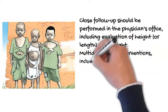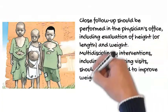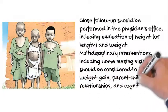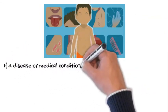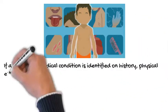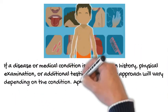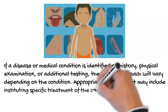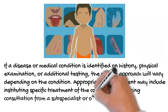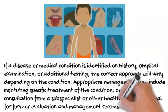Multidisciplinary interventions, including home nursing visits, should be considered to improve weight gain, parent-child relationships, and cognitive development. If a disease or medical condition is identified on history, physical examination, or additional testing, the correct approach will vary depending on the condition. Appropriate management may include instituting specific treatment of the condition, or seeking consultation from a subspecialist or other health care professional for further evaluation and management recommendations.